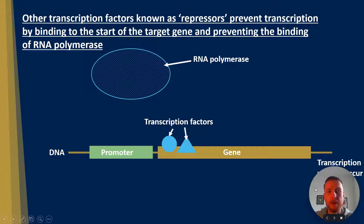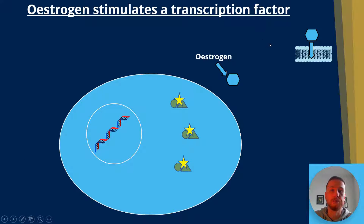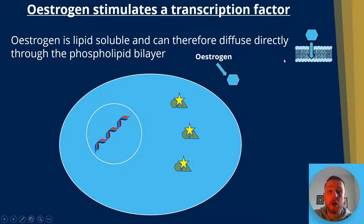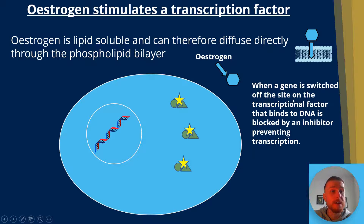You need to know the difference between those two: activators versus repressors. Now oestrogen is lipid soluble and therefore can diffuse directly through the phospholipid bilayer. We've got two layers of phospholipids and oestrogen can just freely diffuse across them due to it being lipid soluble. Now when a gene is switched off, the site on the transcription factors that binds to DNA is blocked by an inhibitor, preventing transcription.